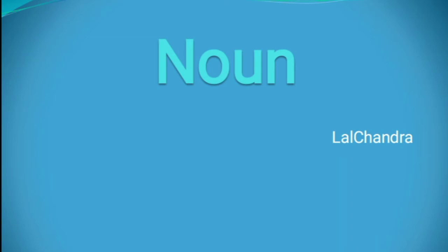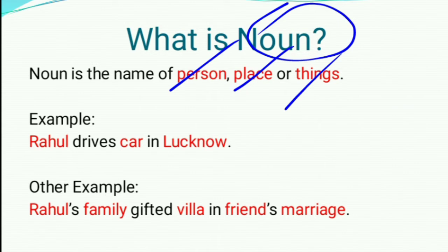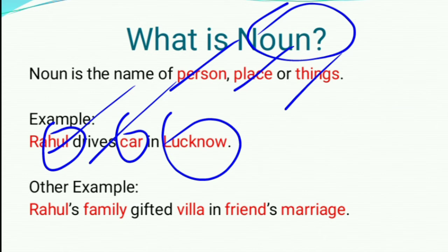Today we shall study about noun. Noun is the name of a person, place or things. For example, Rahul drives car in Lucknow. Here we can see the words in red color: Rahul, car and Lucknow — they all are nouns.